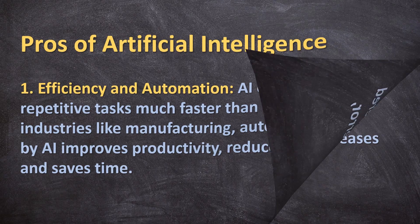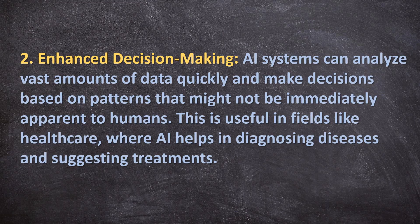Second is enhanced decision making. AI systems can analyze vast amounts of data quickly and make decisions based on patterns that might not be immediately apparent to humans. This is useful in fields like healthcare, where AI helps in diagnosing diseases and suggesting treatments.